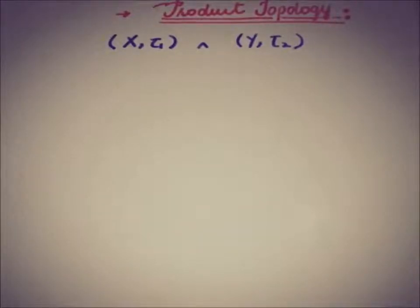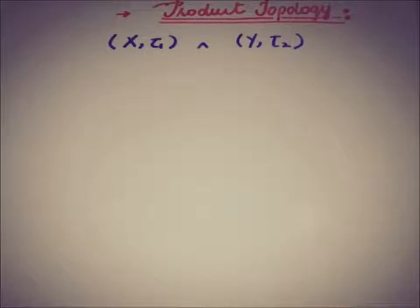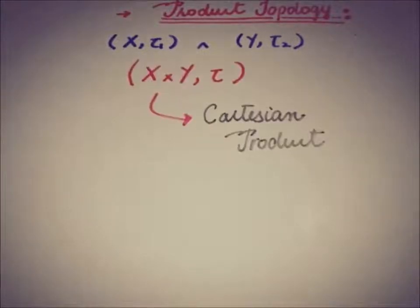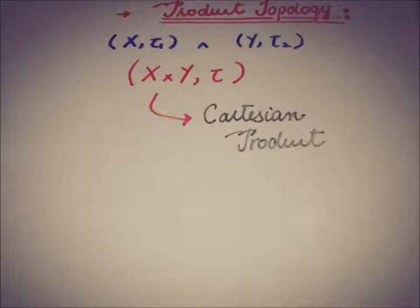So if we have two topological spaces X and Y with the topologies tau1 and tau2 for the spaces X and Y respectively, then X cross Y is the Cartesian product of the two spaces X and Y, and this Cartesian product has topology tau.